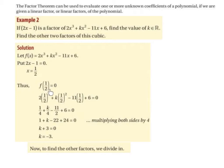2 by a half cubed is going to be a quarter. A half squared by k is going to be k over 4. Minus 11 by a half is going to be minus 11 over 2. And then we still have plus 6, and that's all equal to 0.